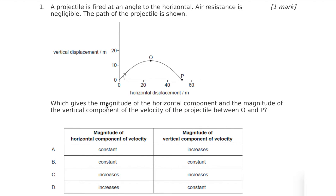We're looking here at projectile motion — our parabola shape of vertical against horizontal displacement. We're being asked to talk about the magnitude of the horizontal component of velocity and the magnitude of the vertical component between these points, O and P. At point O, we have zero vertical velocity, and at point P, we have a non-zero vertical velocity.